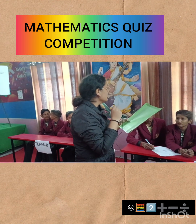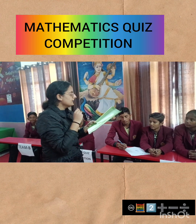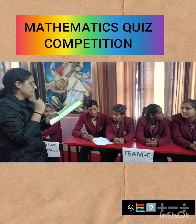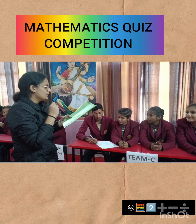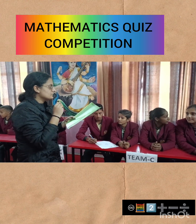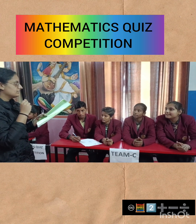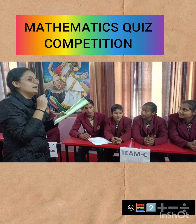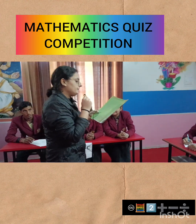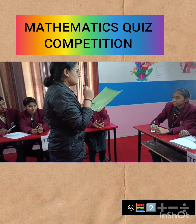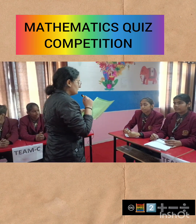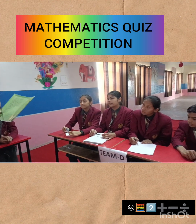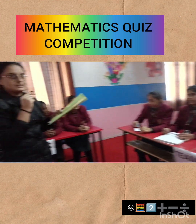Team C, your question: one centimetre cube is equal to dash millilitre — one millilitre is the right answer. Team D, your question: one metre cube is equal to dash litres — a thousand litres is the right answer.